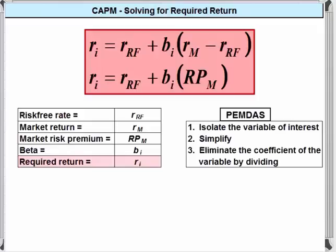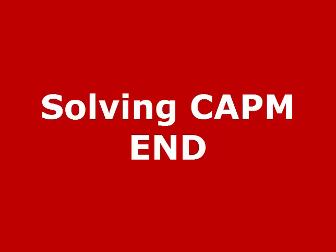Solving for a variable on the right hand side can be a bit more involved. That's when you need to keep the rules in mind. Isolate, simplify, eliminate the coefficient.